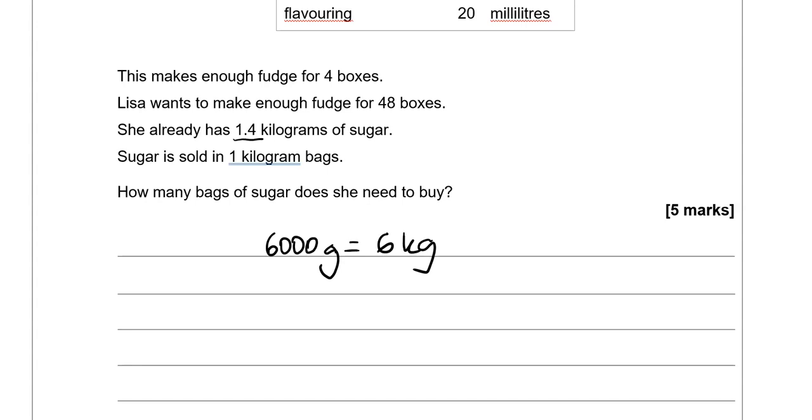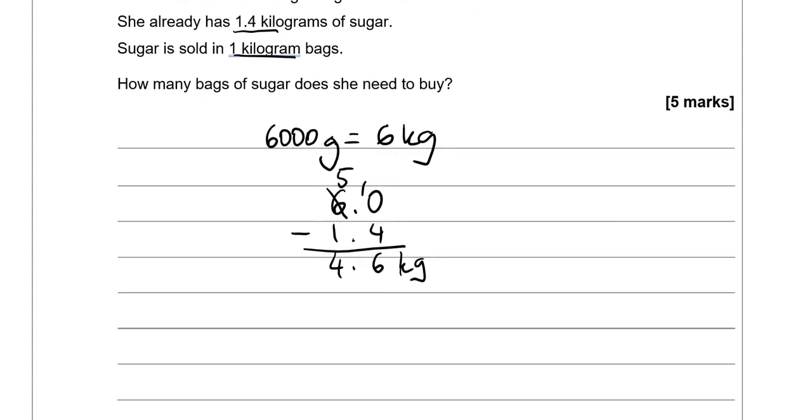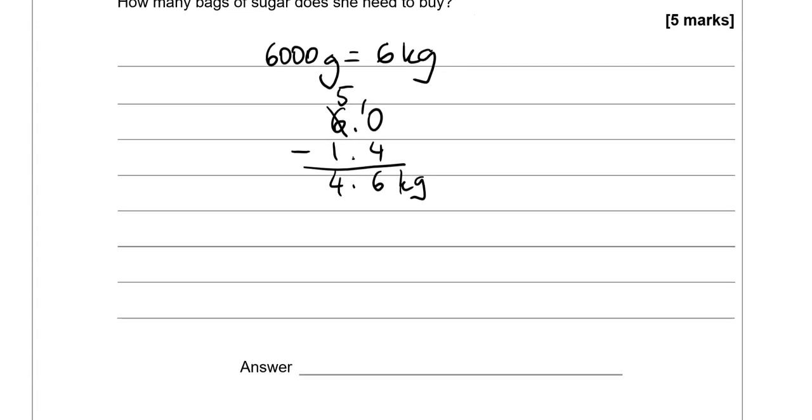She already has 1.4 kilograms. So we're going to do 6 take away 1.4. Borrowing 1 here. So 10 take away 4 gives us 6. 5 take away 1 gives us 4. So 4.6 kilograms. How many bags which are 1 kilogram each? That means 5 bags. We can't go for 4 bags because that wouldn't be enough. So 5 bags.